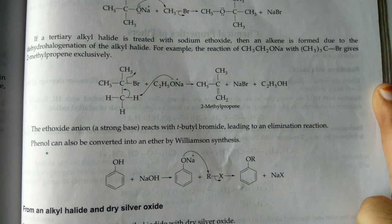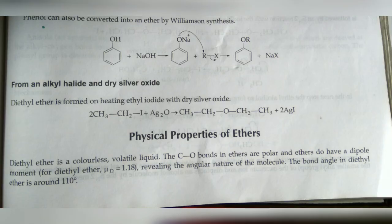Another preparation method is from an alkyl halide and dry silver oxide. You take your alkyl halide and dry silver oxide; 2 AgI (silver iodide) is removed and the rest of the entities join, resulting in diethyl ether.